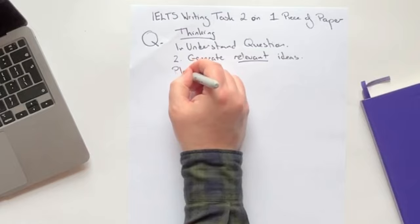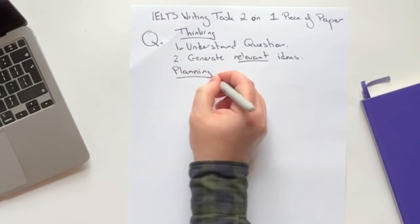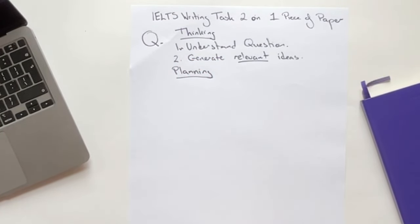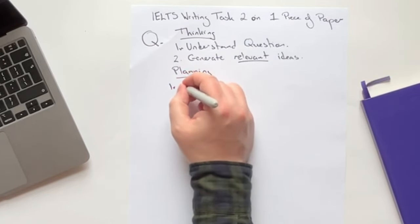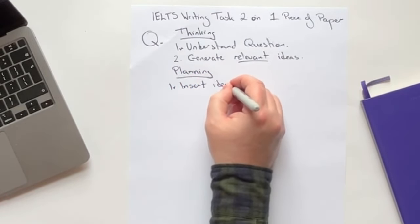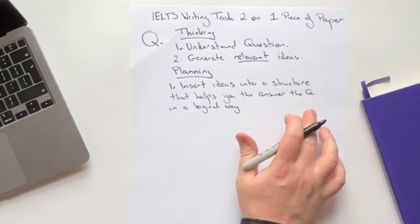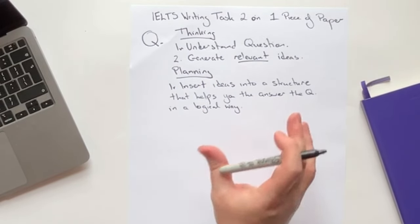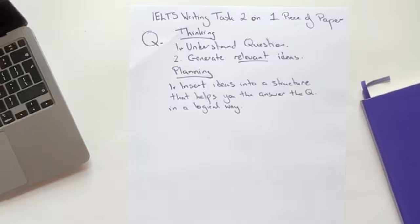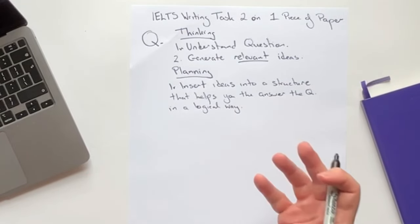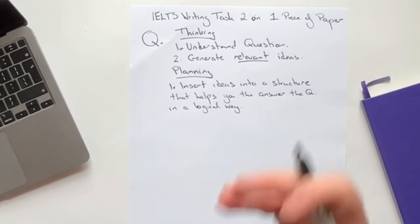So the next stage is planning, because this is going to help us write in a logical, structured, clear way. So what we want to do is we want to insert our ideas into a structure that helps you answer the question in a logical way. So you're taking a structure that has been produced by someone who knows what they're doing, and has helped thousands of students get a high score.